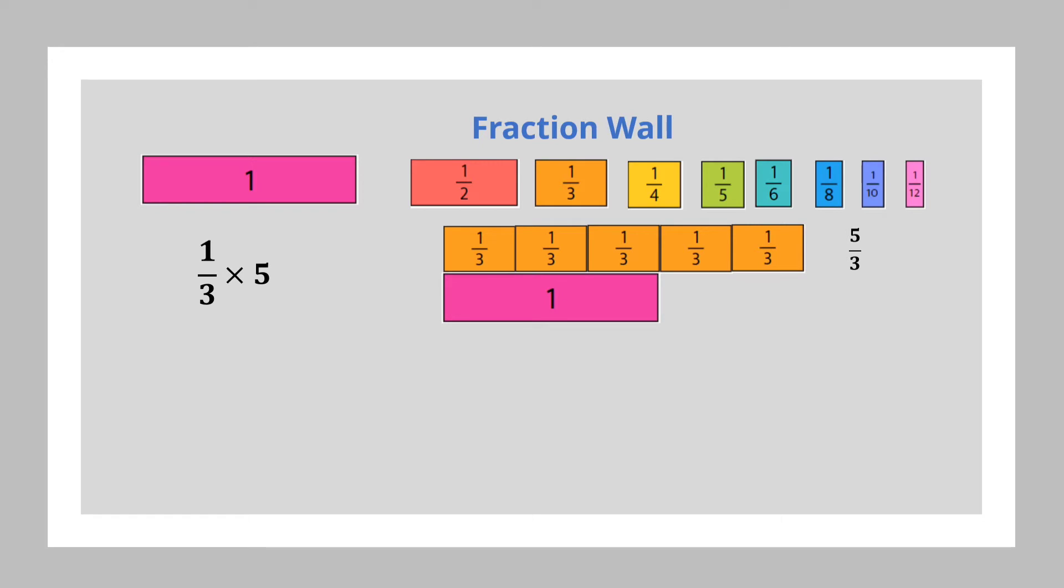When we align the pink tile to the five thirds, here is how it looks. We would recognize that three of the thirds is equal to one. Now when we put the other thirds by the side like this, we will have an equivalence of one whole and two thirds. This means that five thirds is equivalent to one and two thirds.